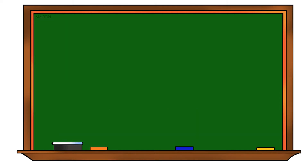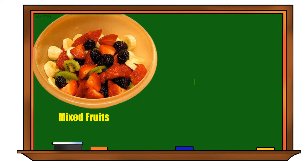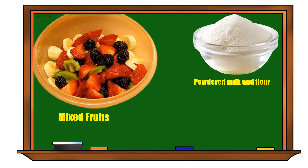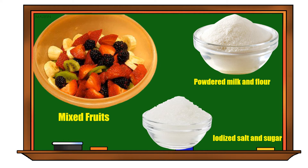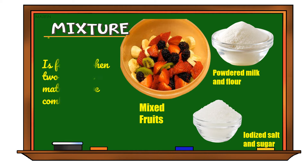Class, I have here a mixture of mixed fruits, a mixture of powdered milk and flour, and a mixture of iodized salt and sugar. Why do you think these materials are called mixtures? What is a mixture? A mixture is formed when two or more materials are combined.